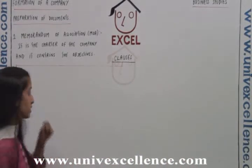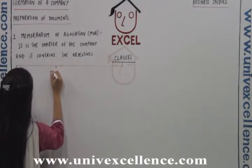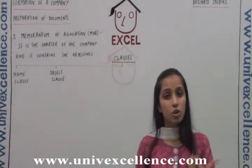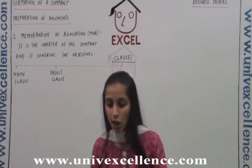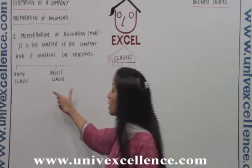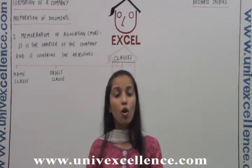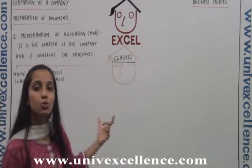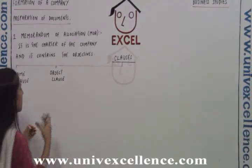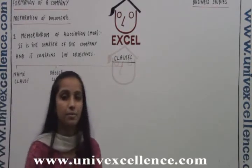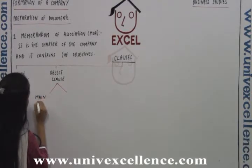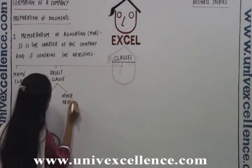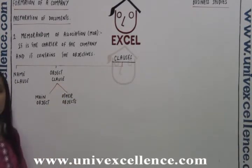The second clause is the object clause. The name itself suggests the object clause contains the objectives of the company. This is the second clause in the memorandum of association — the object clause — which contains the objectives for which the company is formed. It has been further classified into two sub-clauses: main object and other objects.